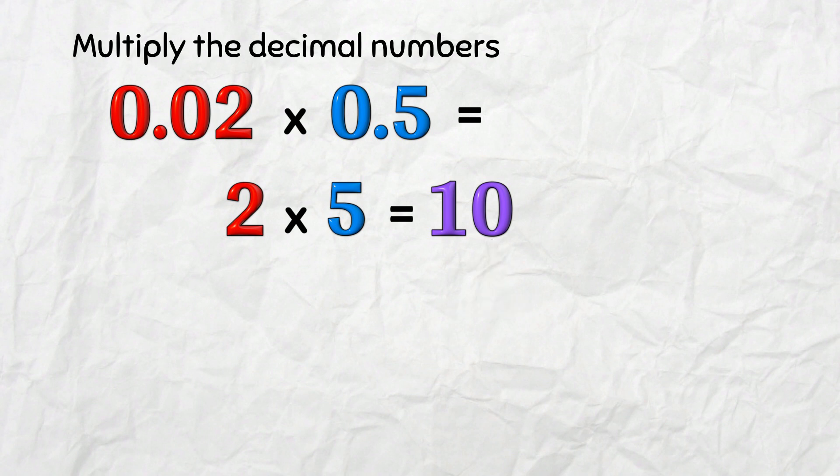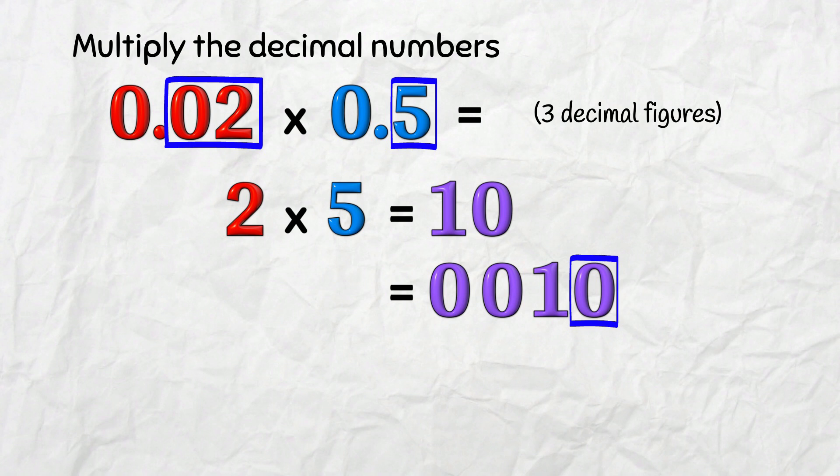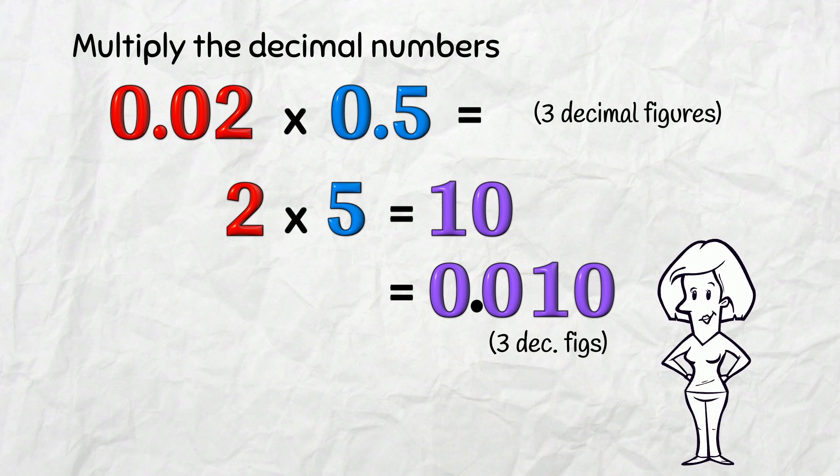Now we put in the decimal figures—2 figures here and 1 here—3 decimal figures to go in the answer! Put some zeros at the front! Now count! 1, 2, 3 figures! The decimal point goes here! 0.010.